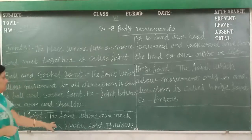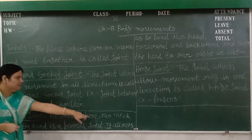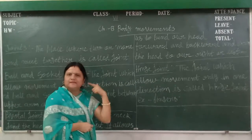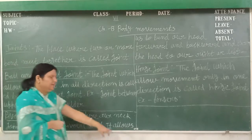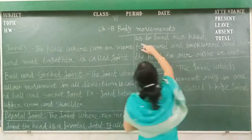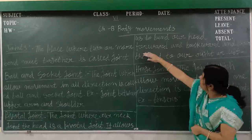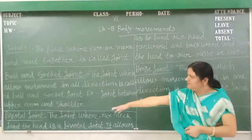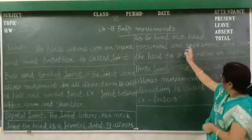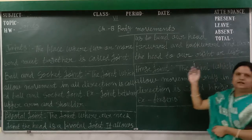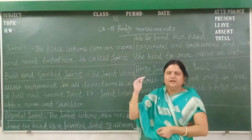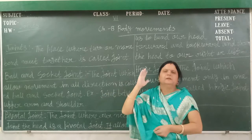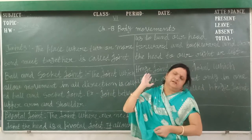Next, pivotal joint. The joint where our neck meets the head — this part is known as the pivotal joint. It allows us to bend our head forward and backward, and also move our head to the right and left. So, we move in forward, backward, left, and right directions with the help of the pivotal joint, which is present in our head and neck.